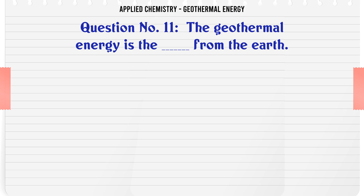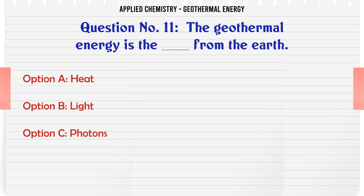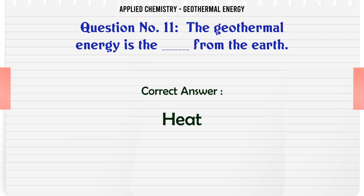Geothermal energy is what from the earth? A: Heat, B: Light, C: Photons, D: Protons. The correct answer is heat.